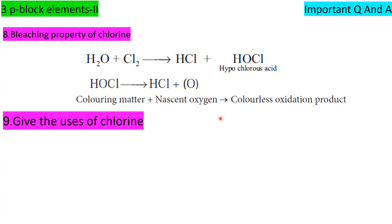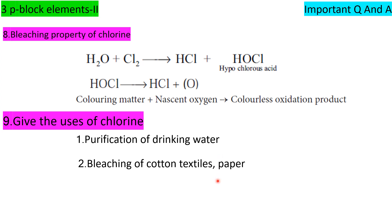Uses of chlorine: first, used in bleaching powder and purification of drinking water; second, bleaching of cotton textiles and paper; third, extraction of gold and platinum metals using chlorine.